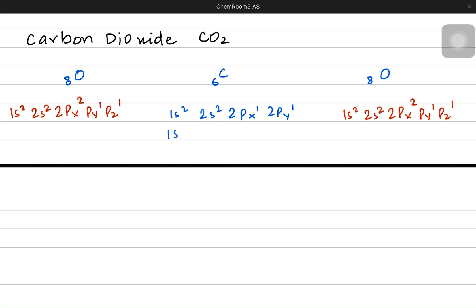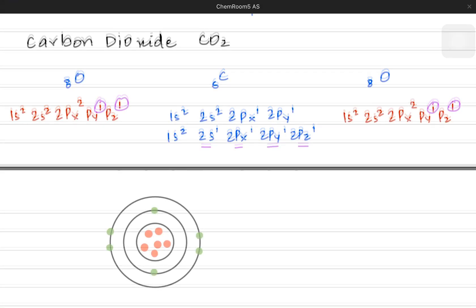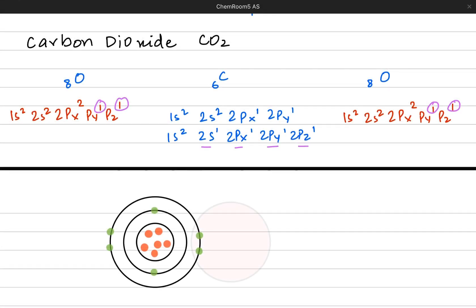Carbon becomes an excited atom by giving one of its s electrons to the pz. So the configuration has now four unpaired electrons. Each oxygen has two unpaired electrons in the py and pz, while carbon has four unpaired electrons. So carbon has the capacity to make four bonds with two oxygen atoms around each side. They make one sigma and one pi bond with each oxygen atom.